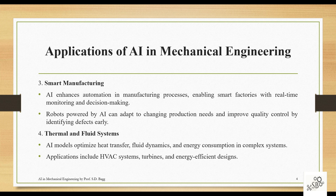The next application is smart manufacturing. AI enhances automation in manufacturing processes, enabling smart factories with real-time monitoring and decision making. Robots powered by AI can adapt to changing production needs and improve quality control by identifying defects earlier. Smart manufacturing is a complete revolutionization of the way mechanical industries used to work. AI-enabled robots now take care of things like monitoring materials on the shop floor and managing defects.